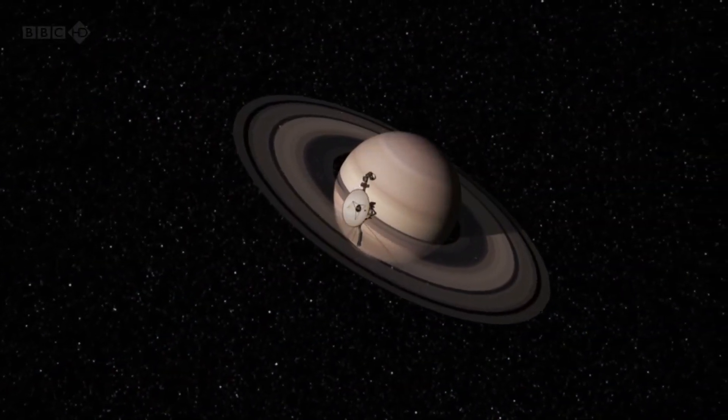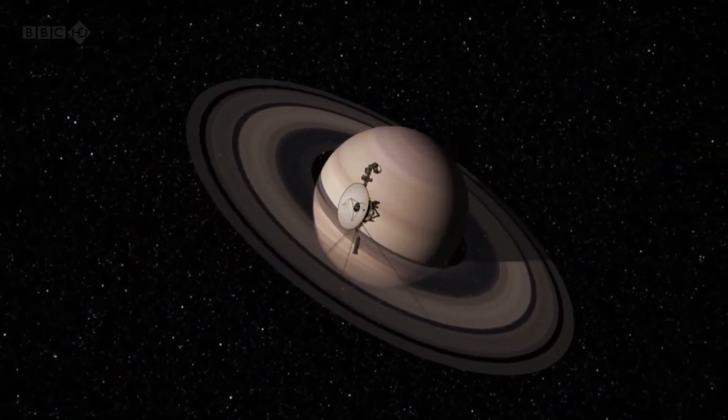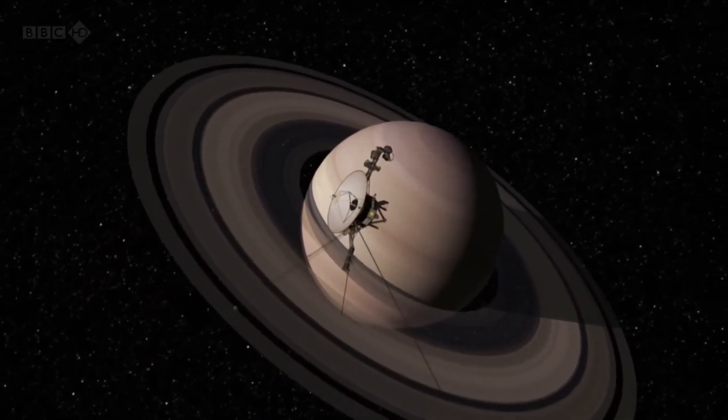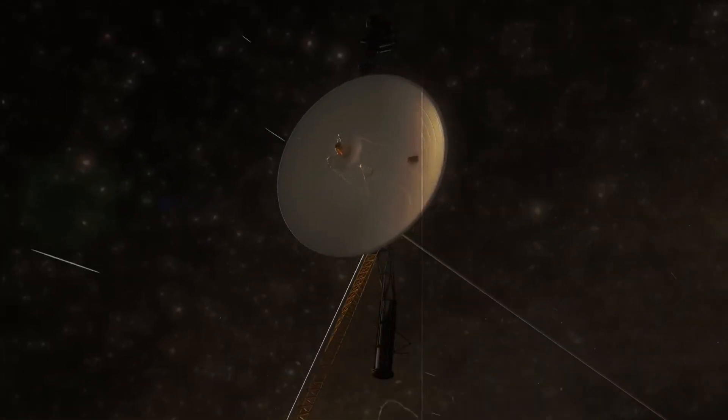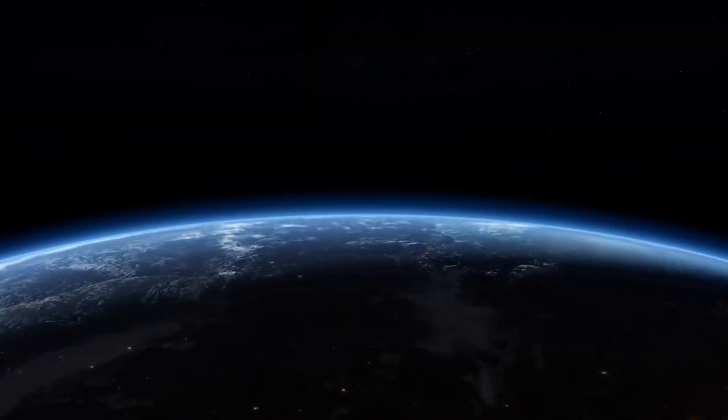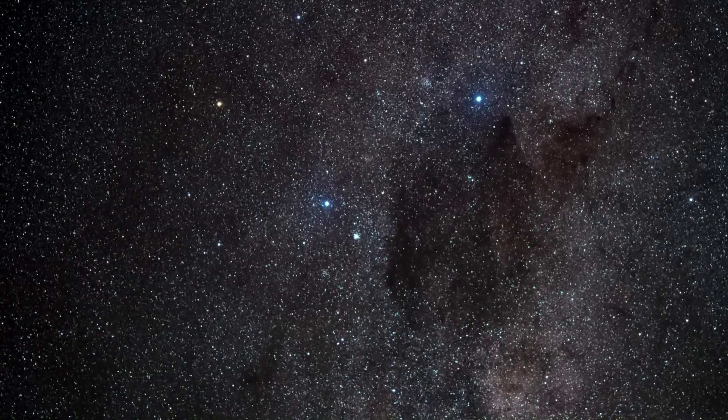And then of course there's the world-famous 1990 image that shows our earth as a tiny blue dot from a distance of 6 billion kilometers. But what would we actually see if we were to turn on Voyager's camera today?